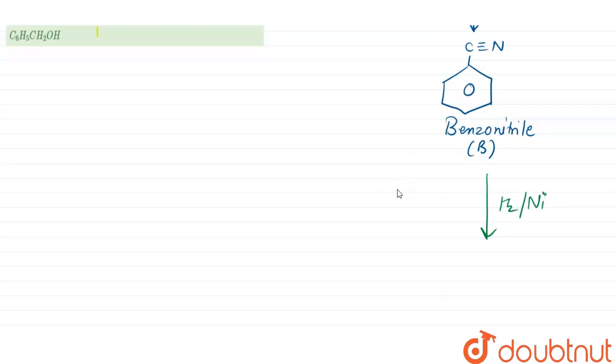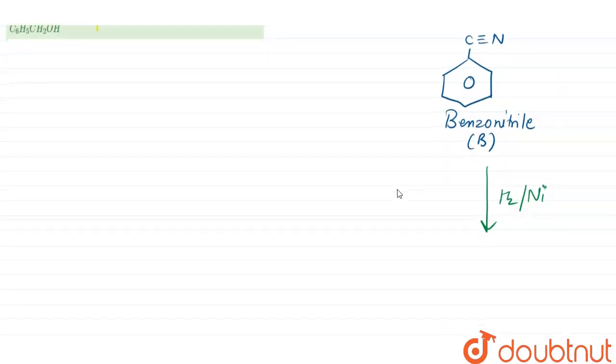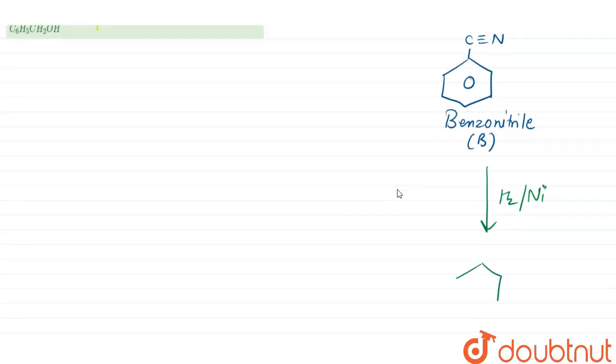That means this triple bond, or you can say unsaturated bonds will convert into saturated compound. This benzene ring with CH2NH2 will form. This will be the product that will be formed here.